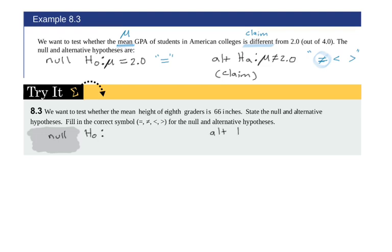I just kind of blotted out the solution there. Let's go ahead and write this out. So same idea for the try it 8.3 here. We're talking means once again. And in the symbols, the null always takes equals. The alternative could be not equals, less than, or greater than. And this time around, it said that the mean height of 8th graders is 66 inches. That means equals. So this time, the null is going to be my claim. So we're going to write it's equal to 66.